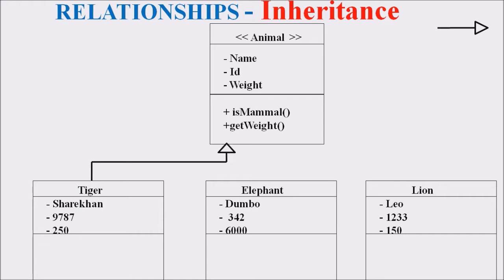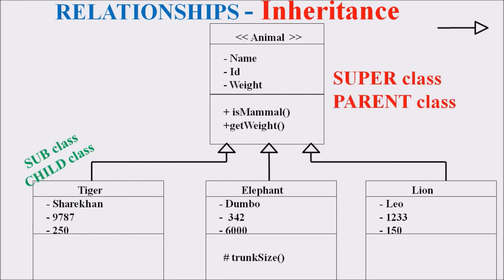The inheritance triangle symbol starts from the Animal class and points toward the Tiger class. The Elephant is named Dumbo, with ID 342 and weight 6000, inheriting values from the base class. Similarly, the Lion is named Leo, with ID 1233 and weight 150, also inheriting from Animal. The class from which others inherit is the base class, superclass, or parent class. Tiger, Elephant, and Lion are subclasses, child classes, or inherited classes.